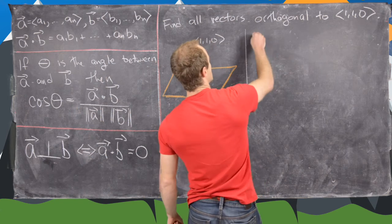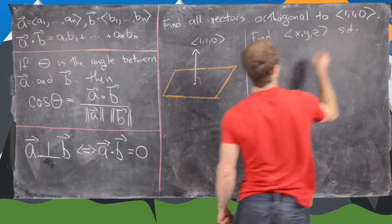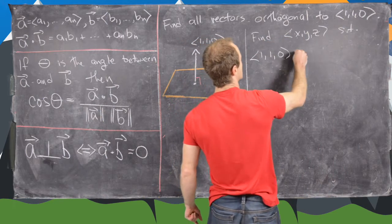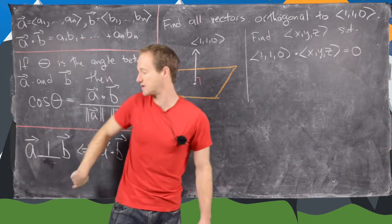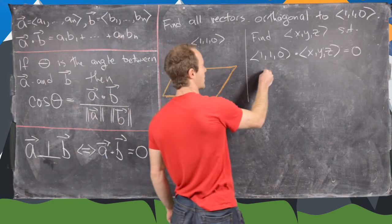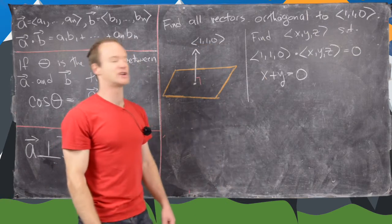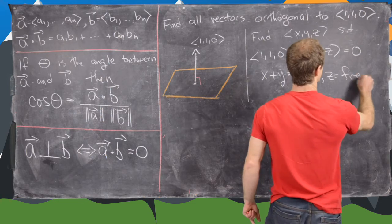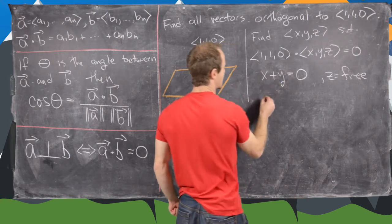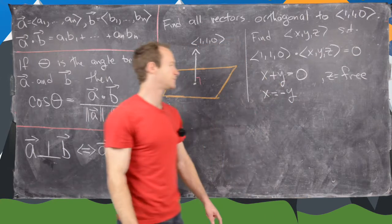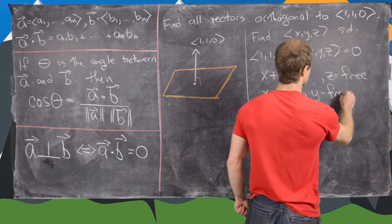So here's what we want to do. We want to find some rules for x, y, and z, such that 1, 1, 0 dot x, y, z equals 0, because that's the classification for orthogonal vectors. Now, using the definition of the dot product, that means x plus y equals 0. But notice there's no mention of z, so we will say that z is some sort of free variable. And then notice here, this allows us to write x as minus y. And so x is restricted by y, but y itself is not restricted, so we could say y is also a free variable.